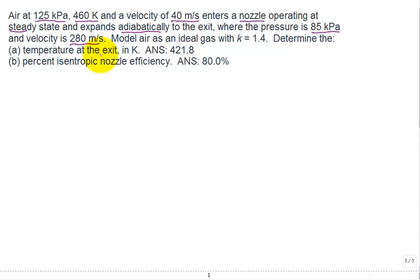Continuing to read: model the air as an ideal gas with the constant k of 1.4, so it's like a cold air standard analysis. Determine the temperature at the exit in kelvin and the percent isentropic nozzle efficiency.